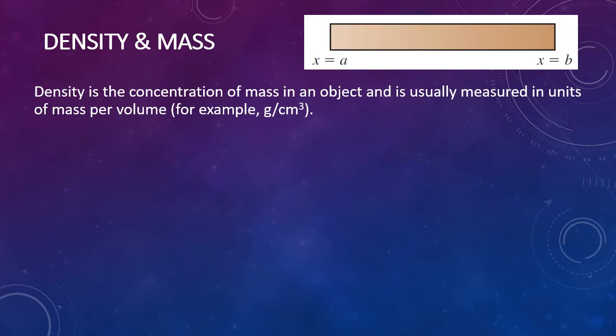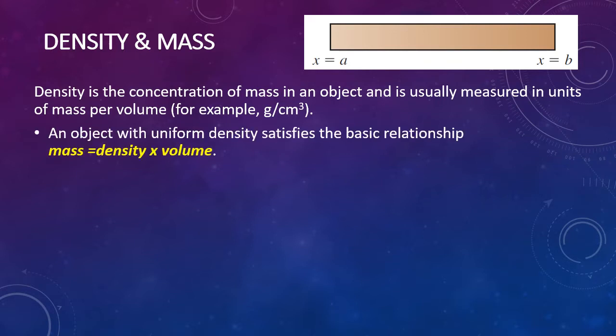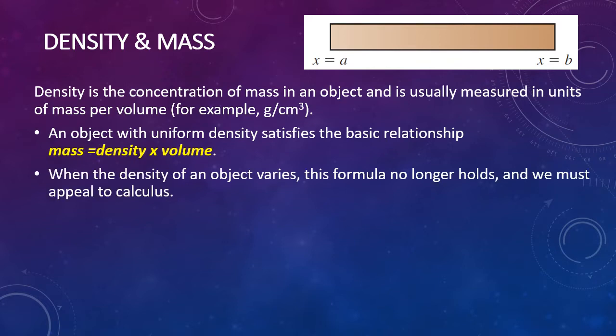We're going to begin with density and mass. Density is the concentration of mass in an object and is usually measured in units of mass per volume — for example, grams per cubic centimeter. An object with uniform density satisfies the basic relationship that mass equals density times volume. However, not all objects have a uniform density, and when the density varies, this formula no longer holds and we must appeal to calculus and use our integrals.